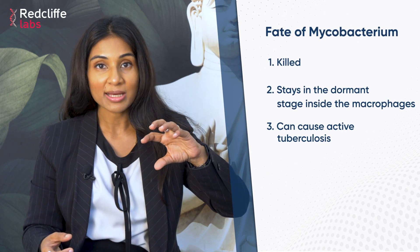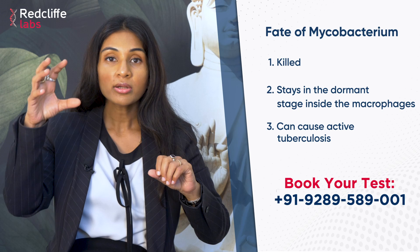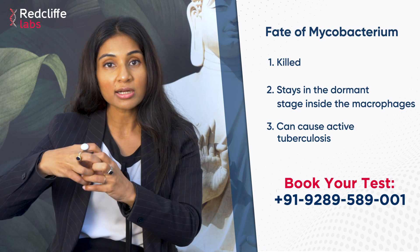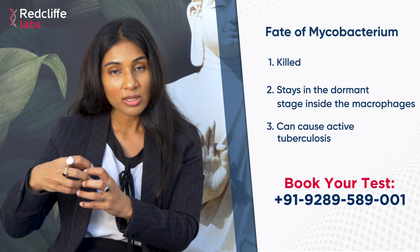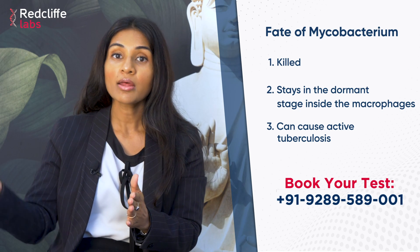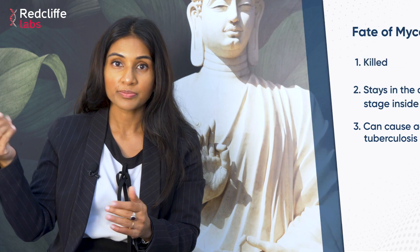When the TB bacilli reach the alveoli, they are engulfed by the macrophages. Depending upon the immune response, the TB bacilli are either killed, curtailed within the macrophages remaining dormant, or they result in active tuberculosis. These are the three main fates of TB bacilli once they enter the alveoli.